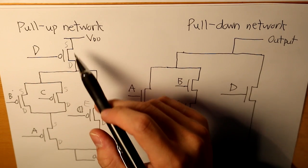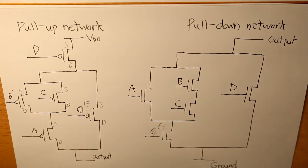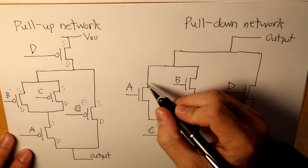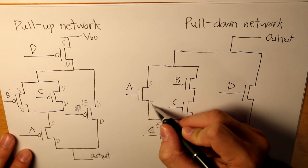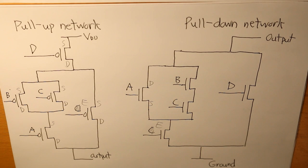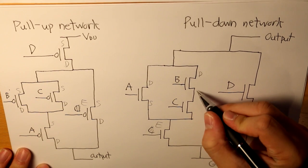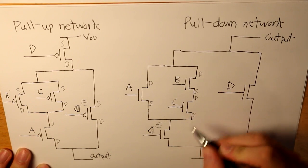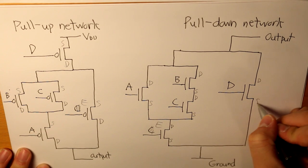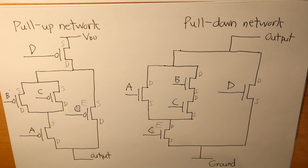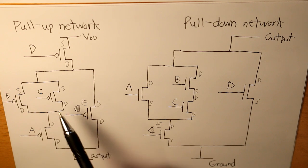For each PMOS transistor, you have D on the bottom and S on the top. For the NMOS transistors, it's going to be different — we have the drain at the top and the source at the bottom for each NMOS transistor. I'm going to label it for the rest of the inputs as well. This is it for the pull-up network and pull-down network, and it's important to label all the symbols SD and DS for each transistor.